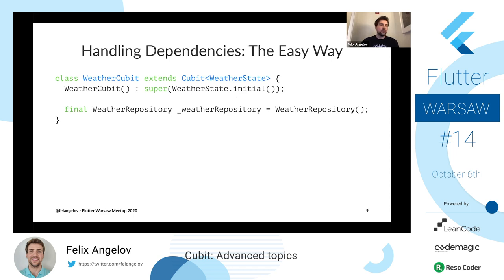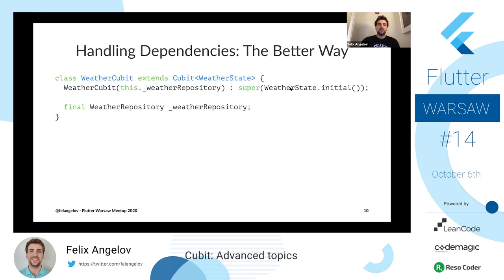The better way is to actually inject the repository into the cubit. What that does is it gives you a clear separation between what the cubit is doing and the thing that it's depending on. Now you can inject a mock repository or different types of the weather repository and you have control over that dependency. Whereas before it was an internal dependency — once you create the weather cubit you have zero control over what repository it's using or where it's getting its data.